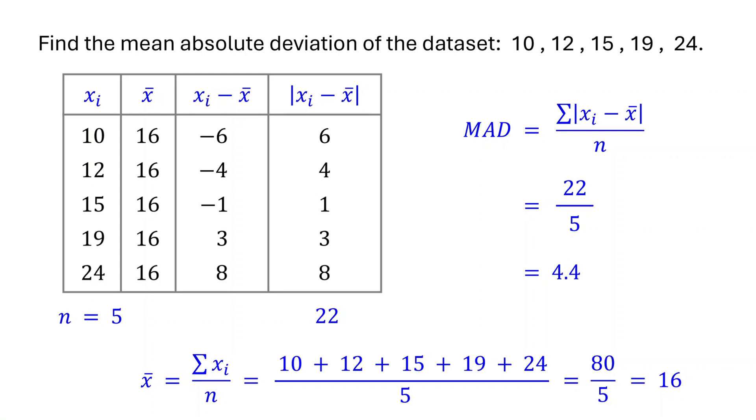But what does this mean? The mean absolute deviation of 4.4 means that, on average, the data points are about 4.4 units away from the mean. Here, the mean is 16. So, on average, the data points are about 4.4 units away from 16.